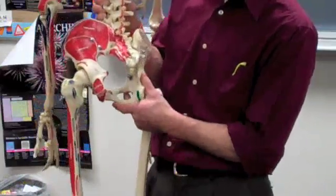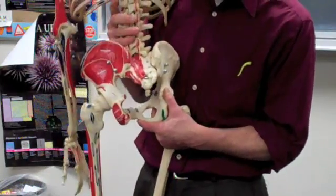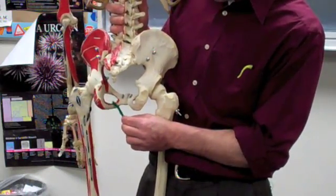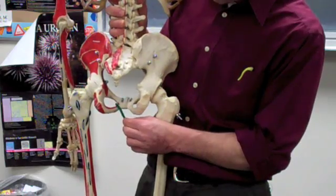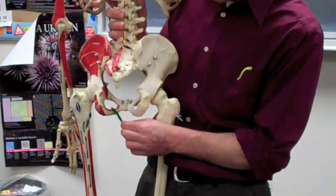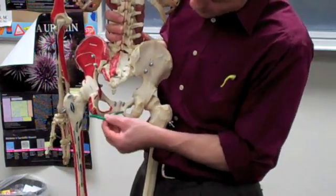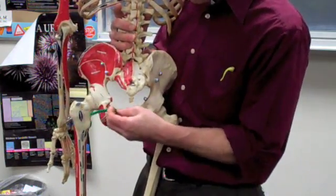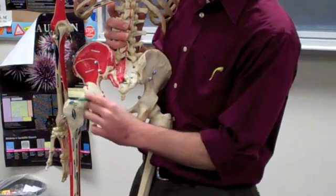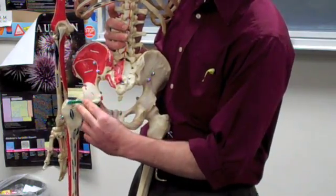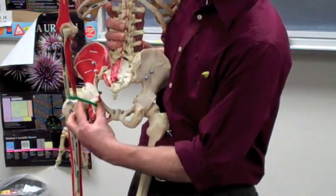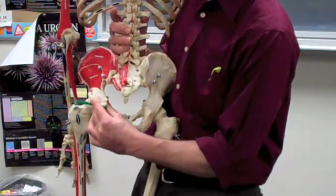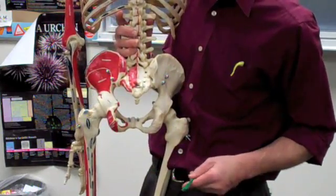Now the challenging ones, obturator internus and obturator externus. The obturator internus starts at the medial area, medial border of the obturator foramen, it wraps around the lesser sciatic notch and attaches to the greater trochanter. It moves, it comes out in between the superior and the inferior gemellus muscle.